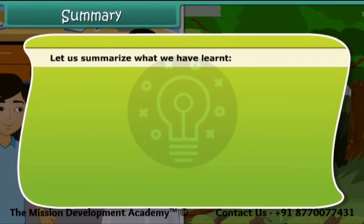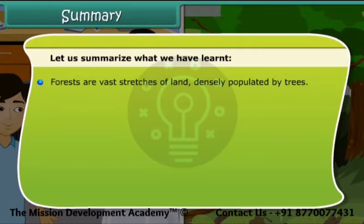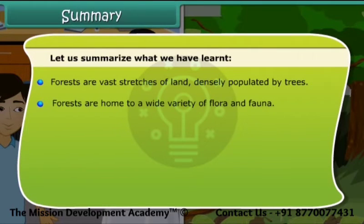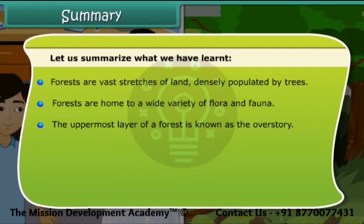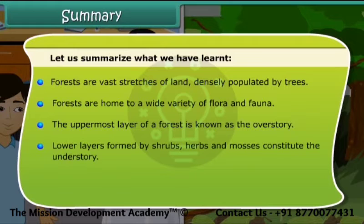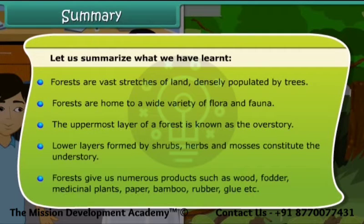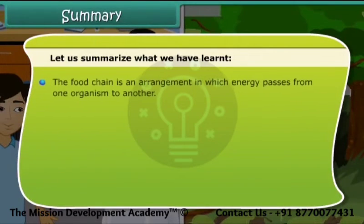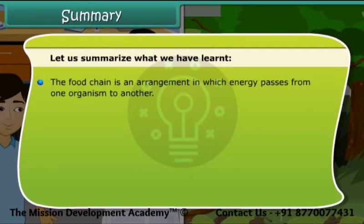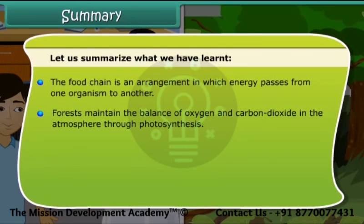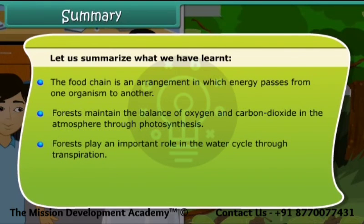Let us summarize what we have learned. Forests are vast stretches of land densely populated by trees. They are home to a wide variety of flora and fauna. The uppermost layer of a forest is known as the overstory; lower layers formed by shrubs, herbs and mosses constitute the understory. Forests give us numerous products such as wood, fodder, medicinal plants, paper, bamboo, rubber, glue, etc. The food chain is an arrangement in which energy passes from one organism to another. Forests maintain the balance of oxygen and carbon dioxide through photosynthesis, play an important role in the water cycle through transpiration, and prevent soil erosion and air and water pollution.